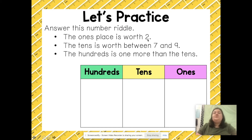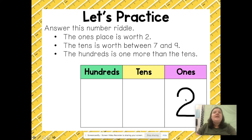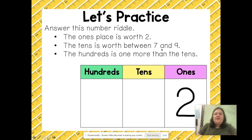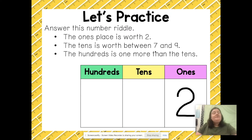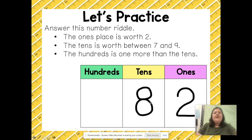First number riddle: the ones place is worth two, so I write a two in the ones place. The tens is worth between seven and nine — what digit comes between seven and nine? Eight! So I have eight tens. The hundreds is worth one more than the tens — eight plus one is nine, so I have a nine in the hundreds place.